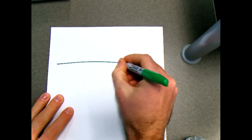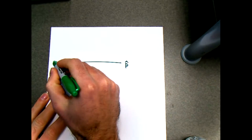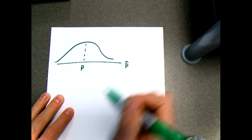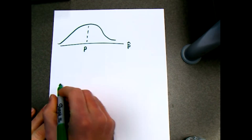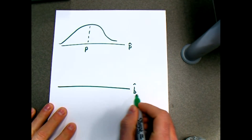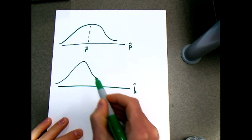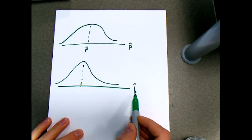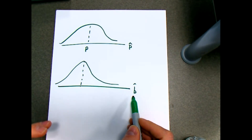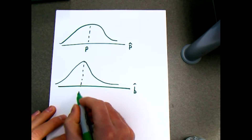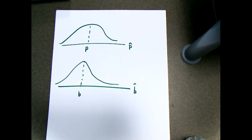Think about it this way: when we were dealing with the distribution of sample proportions, we knew that should be centered around the true population proportion. In the same way, we're going to be getting estimates for that slope based off of sample data. Just like sample means and sample proportions, you can think about them as sample slope coefficients or sample slope estimates — these will be centered around whatever that true population slope is, which is the true value of that relationship between X and Y.